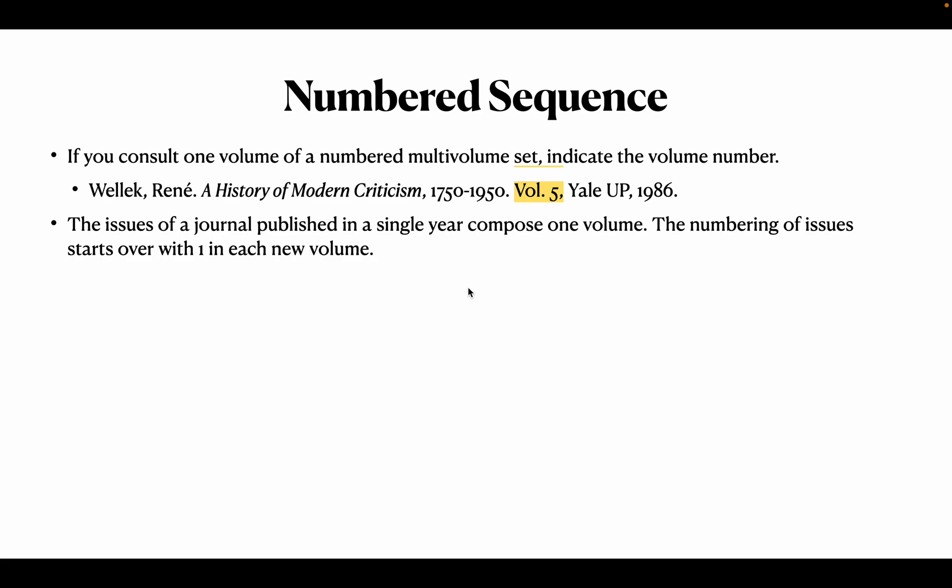If you look at volume, issue, and number — number is the total sequential count of issues. In the first year there will be 12 issues. In the second year it will again be volume 2, issue 1, but volume 2, issue 1 will be number 13 — sequentially numbered from the beginning. Issue is within a year; number is the cumulative count.